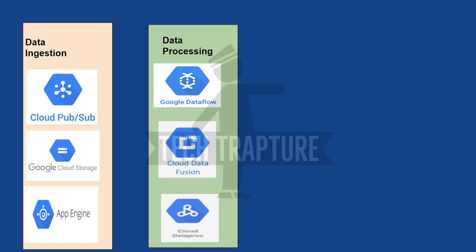Cloud Dataproc is mostly for big data and Hadoop jobs. Anywhere it is mentioned that your current workload or Hadoop and big data pipeline has to be migrated to Google Cloud, always go for Cloud Dataproc. It is the service for Hadoop, Apache Spark, and big data workloads in Google Cloud. To summarize: streaming processing → Dataflow; no-code solution → Data Fusion; big data and Hadoop → Dataproc.